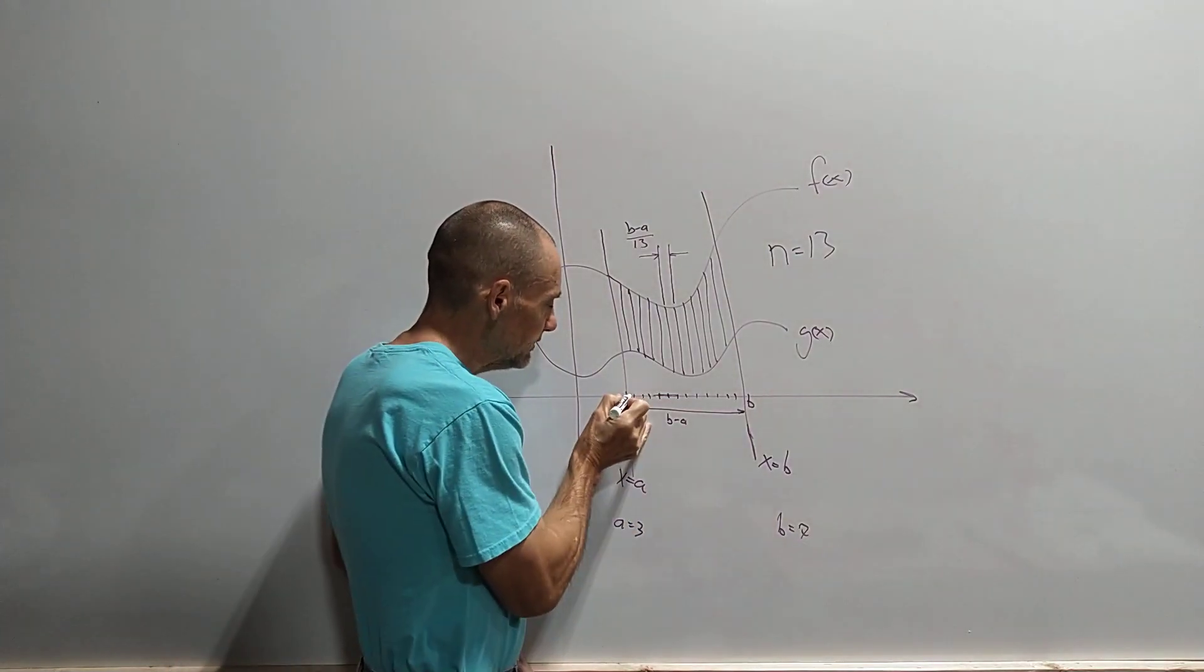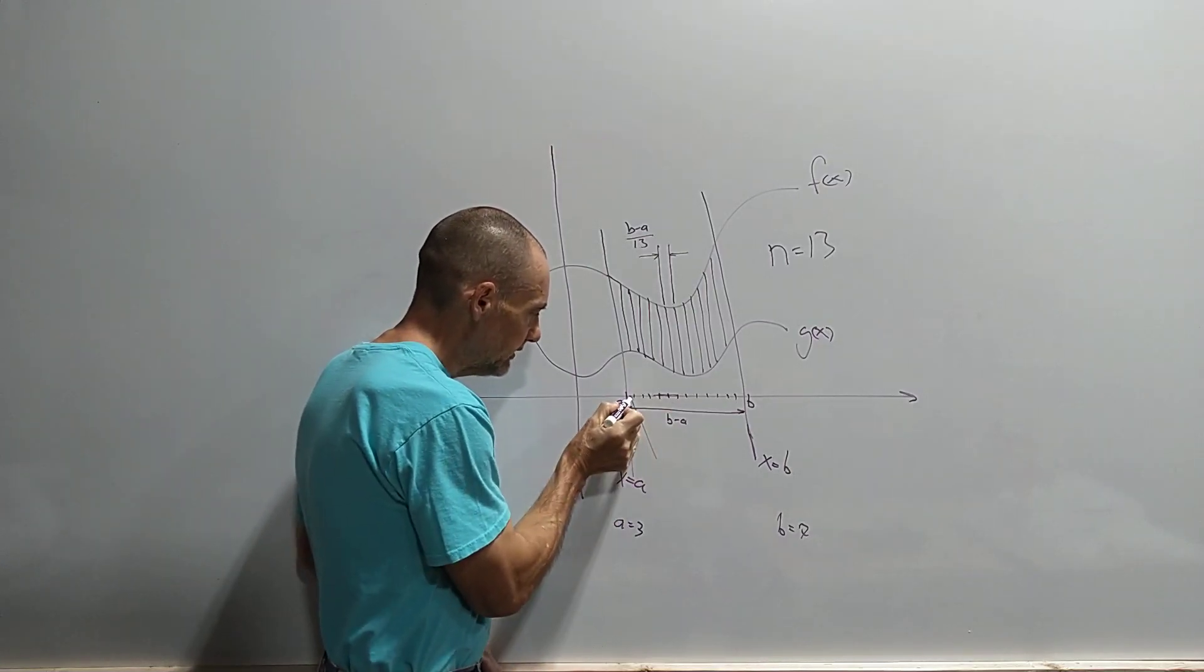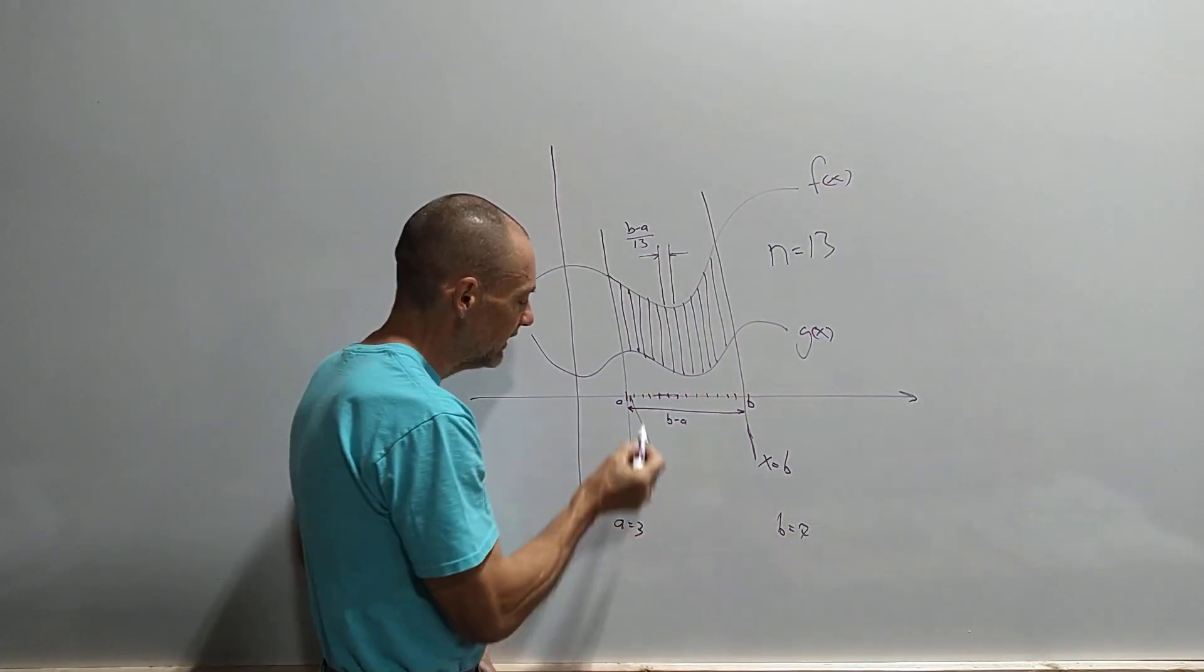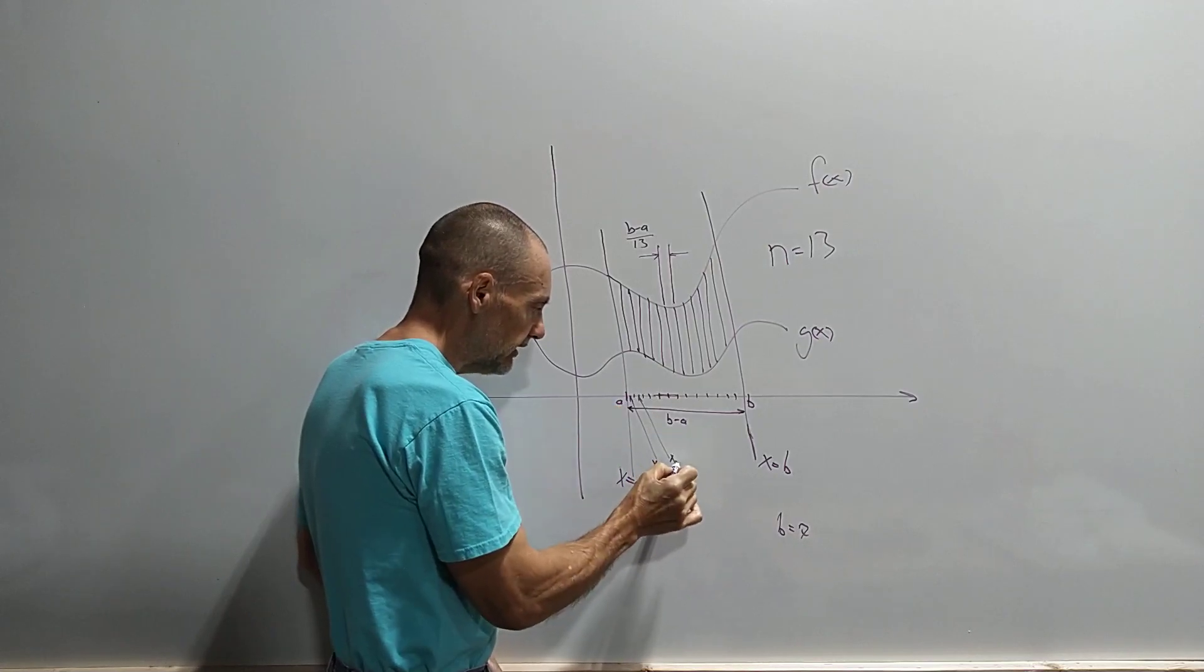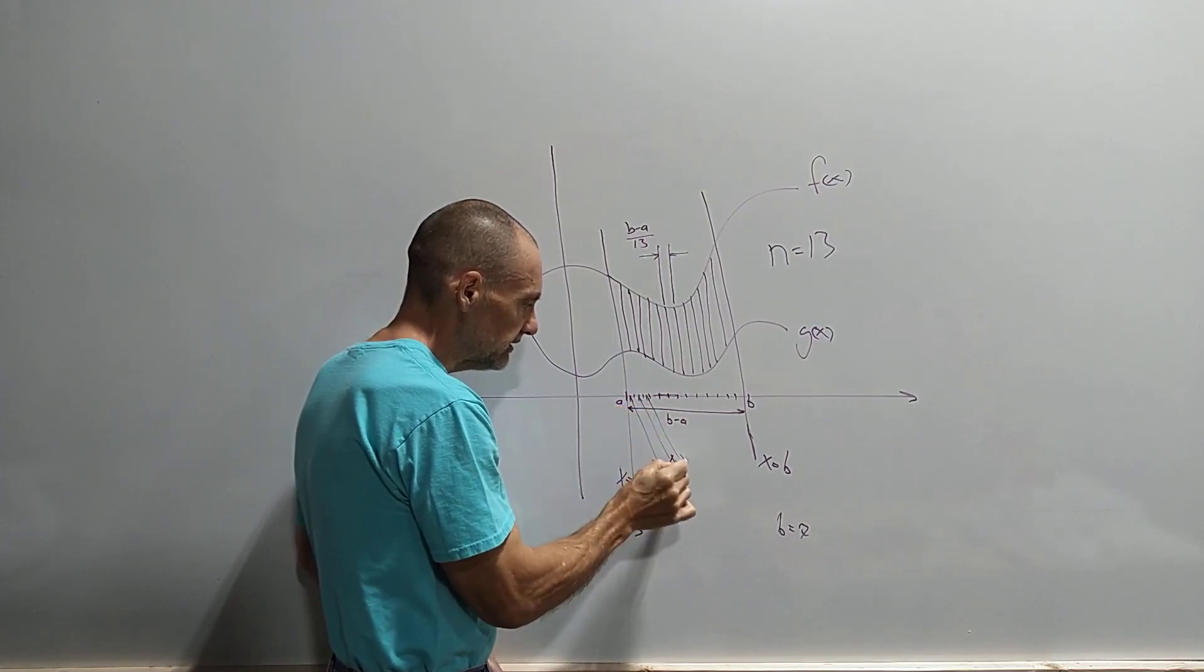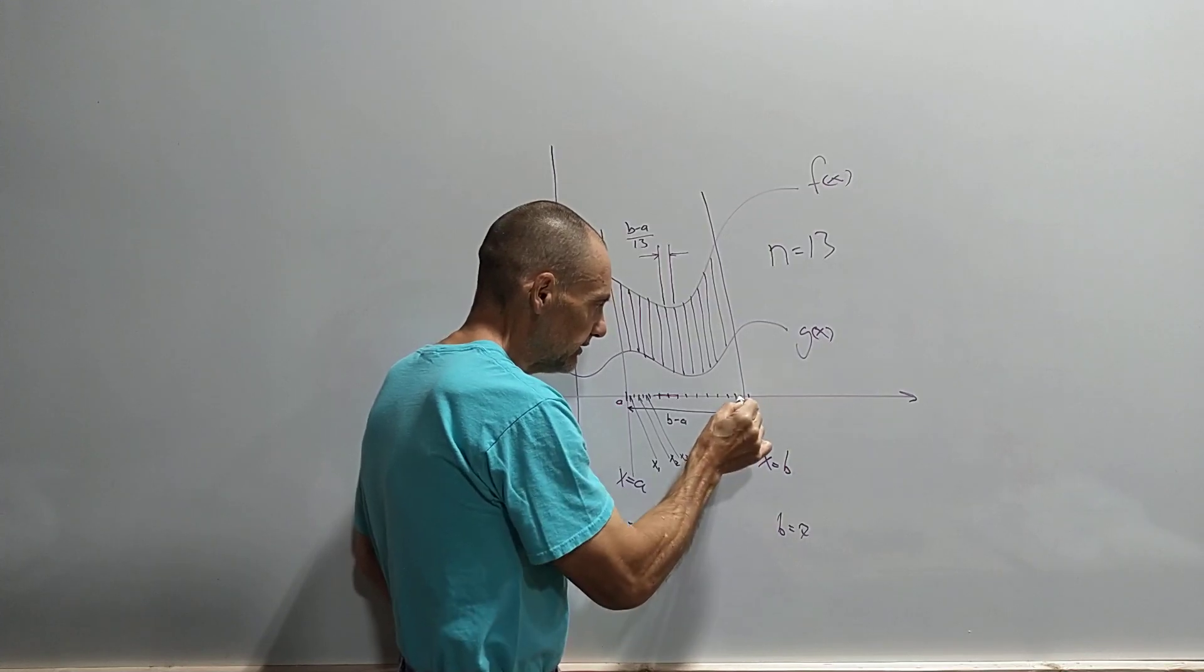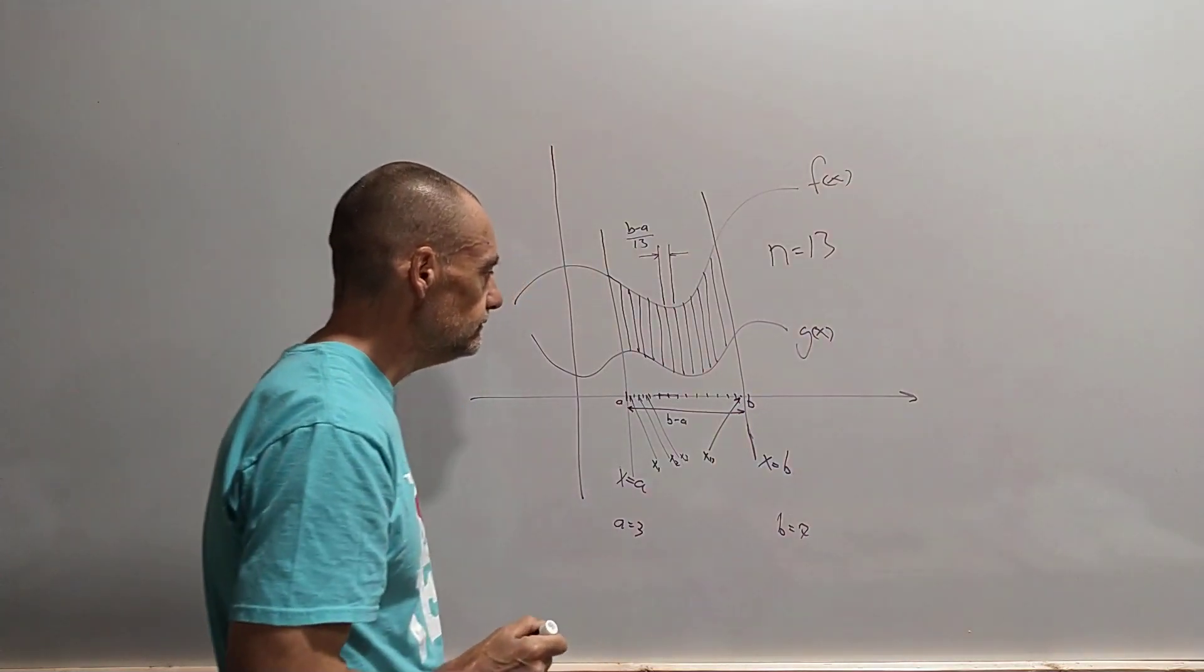Now, in each one of these, there is a point, and that point I can call x1 because it's a point inside my first width of my first rectangle. It doesn't matter where it is. And here there's another one, and I can call that point x2. And in this rectangle, somewhere in there, there's a point there that's x3, and so on, all the way to over here. Somewhere inside of this little domain here, someplace in here, there's an x13.